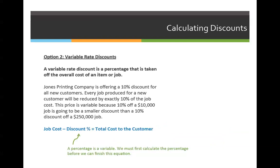The second type of discount problem is a variable rate discount problem. We're still going to use the same original formula: job cost minus the discount equals the total cost to the customer. However, we cannot subtract a percentage until we calculate what that percentage is equal to — it's considered a variable until we finish calculating how much it's worth. Depending on the job cost and the percentage of the discount, the number can change dramatically. For example, Jones Printing Company is offering a 10% discount for all new customers. Every job produced for a new customer will be reduced by exactly 10% of the job cost. This price is variable because 10% of $10,000 is going to be a smaller discount than 10% of a $250,000 job.